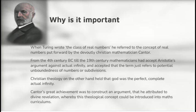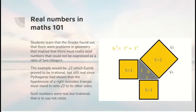Christian theology, on the other hand, held that God was the perfect, complete, actual infinity. Cantor's great achievement was to construct an argument that he attributed to divine revelation. He claimed it came in a dream from God, whereby this theological concept could be introduced into maths curriculum. Real numbers 101.